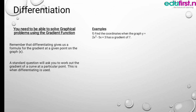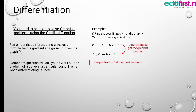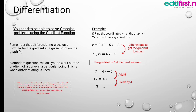Another example: find the coordinate when the graph y equals 2x squared minus 5x plus 3 has a gradient of 7. After differentiating, we have f'(x) equals 4x minus 5. The 3 is constant. Since the gradient is 7 at the point we want, set 7 equals 4x minus 5. Add 5 to both sides: 12 equals 4x, because 7 plus 5 equals 12. Divide both sides by 4, and we get x equals 3.